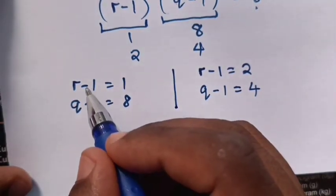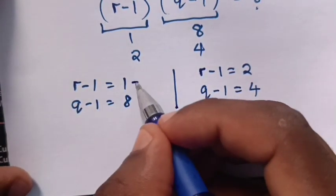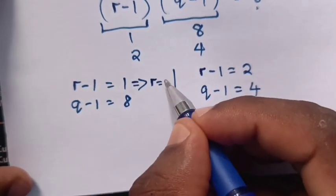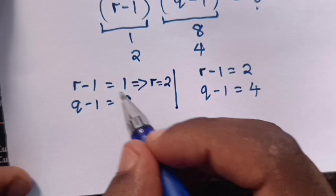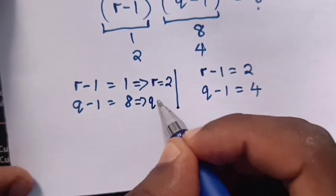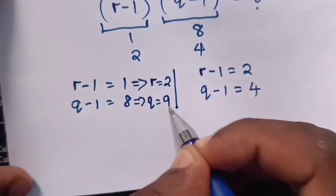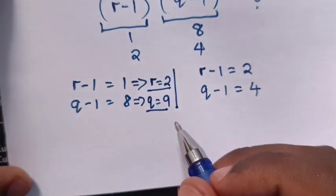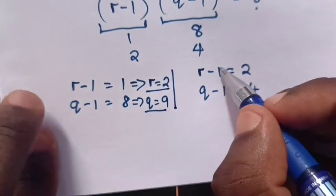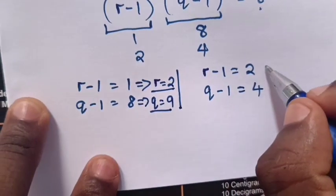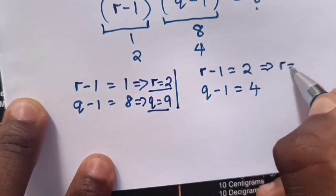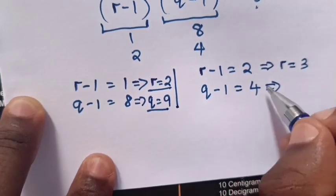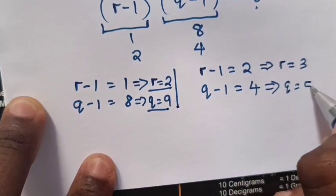Now R minus 1 equals 1, we take negative 1 to the right side, so R equals 2. And here we take negative 1 to the right side, Q equals 9. Then here we take negative 1 to the right side, so R equals 1 plus 2 is 3. And here we take negative 1 to the right side, 1 plus 4 is 5.